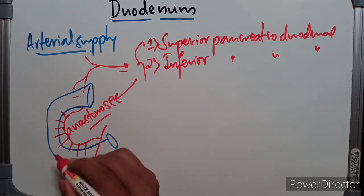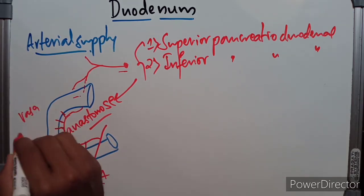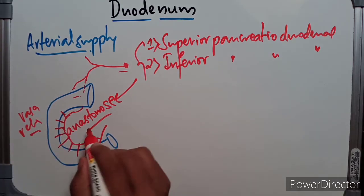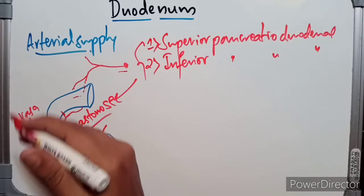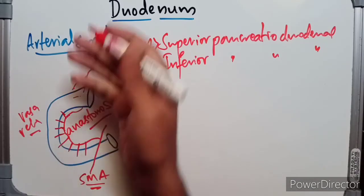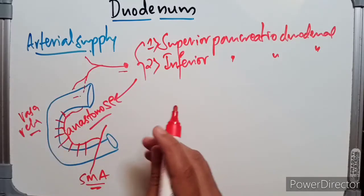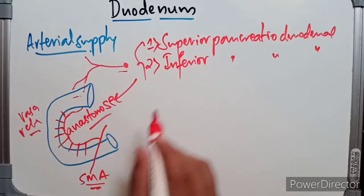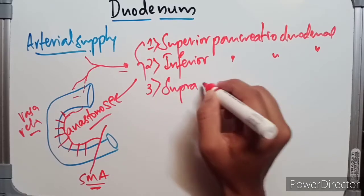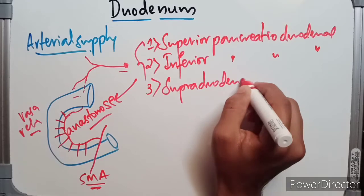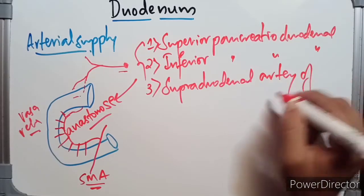Each anastomotic arterial arcade gives off a row of vasarecta. The vasarecta of the anterior arcade supply the anterior surface of the duodenum, and those of the posterior arcade supply the posterior surface. Between the two rows of vasarecta, the head of the pancreas is situated. There is also a third artery called the supra-duodenal artery of Wilkie.